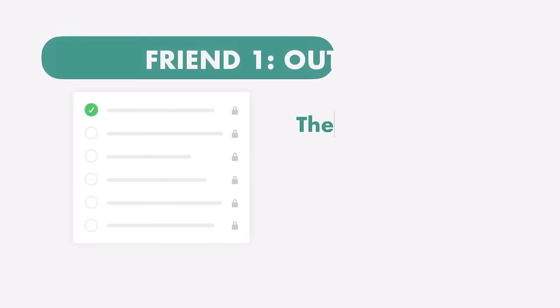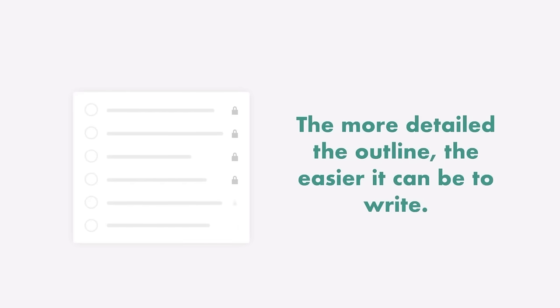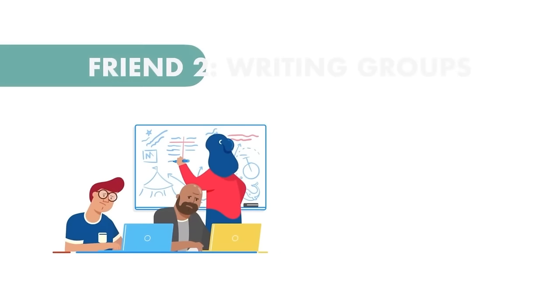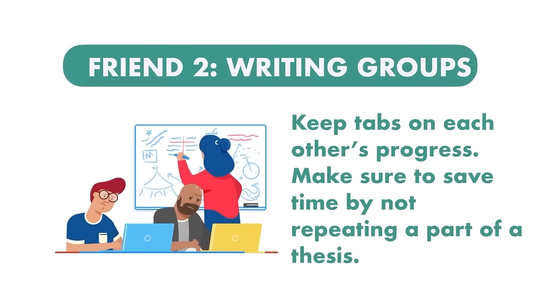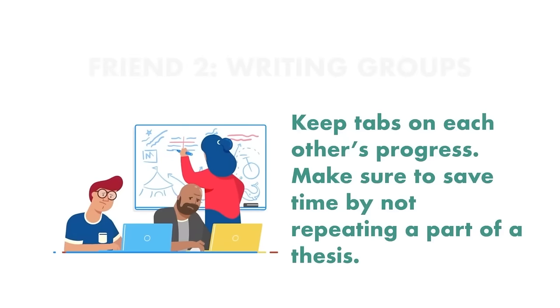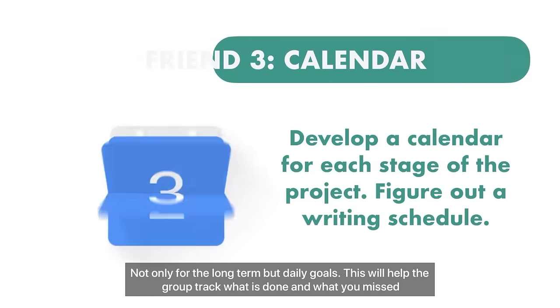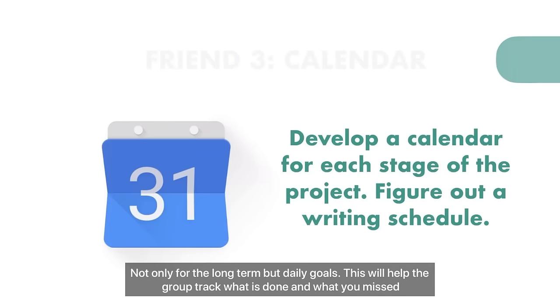Friend 1: The outline. The more detailed the outline, the easier it can be to write. Friend 2: Writing groups or circles. Keep tabs on each other's progress and make sure to save time by not repeating a part of a thesis — in this way you can monitor who's doing what part. Friend 3: Calendar. Develop a calendar for each stage of the project. Figure out a writing schedule, not only for the long term but daily goals — this will help the group track what is done and what you missed.